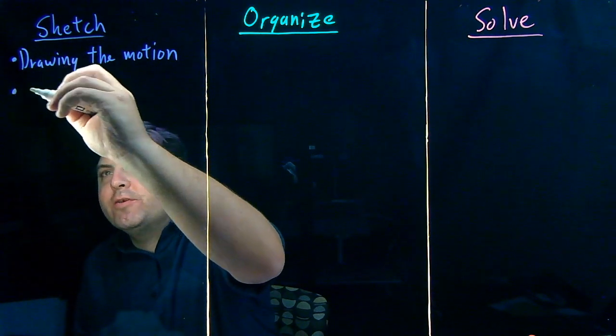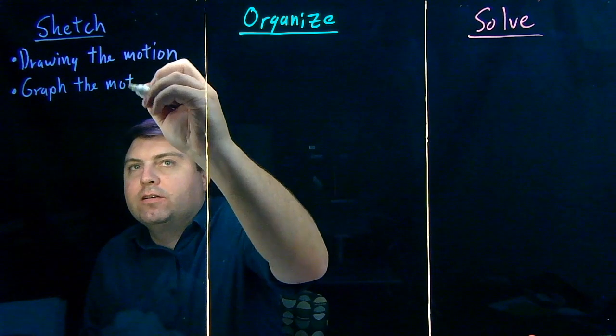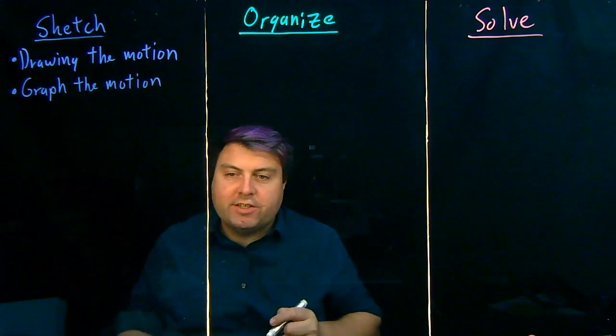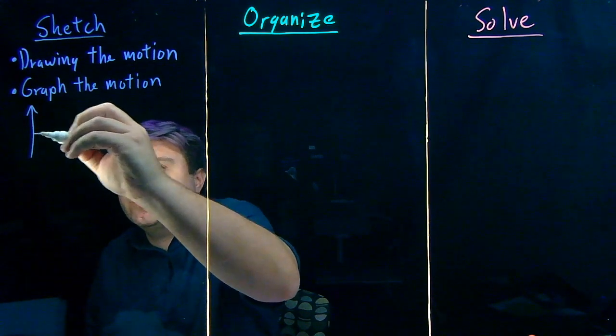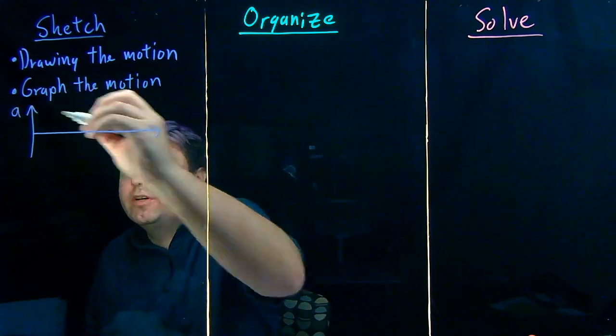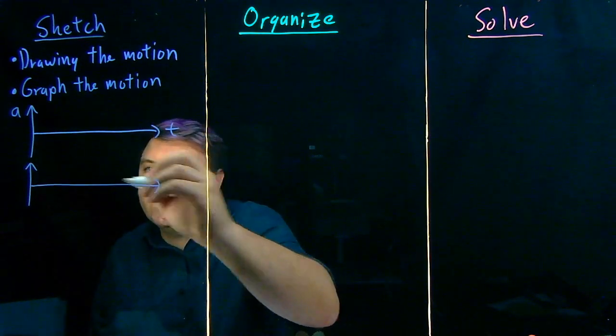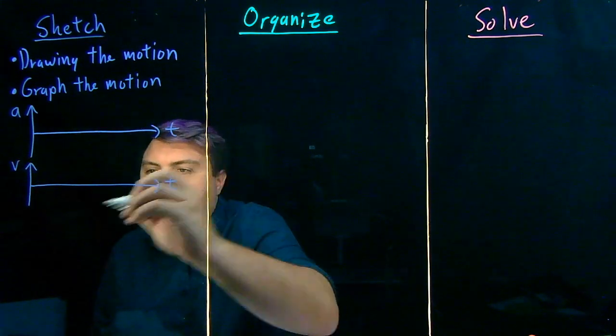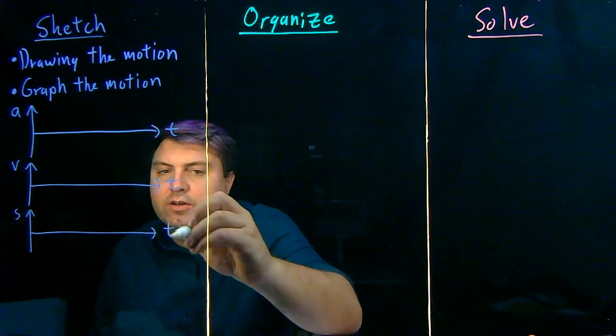Next is to graph the motion. We want to see how this works in different directions and different derivatives. So we are going to start in one dimension with our acceleration versus time, our velocity versus time, and our position versus time.